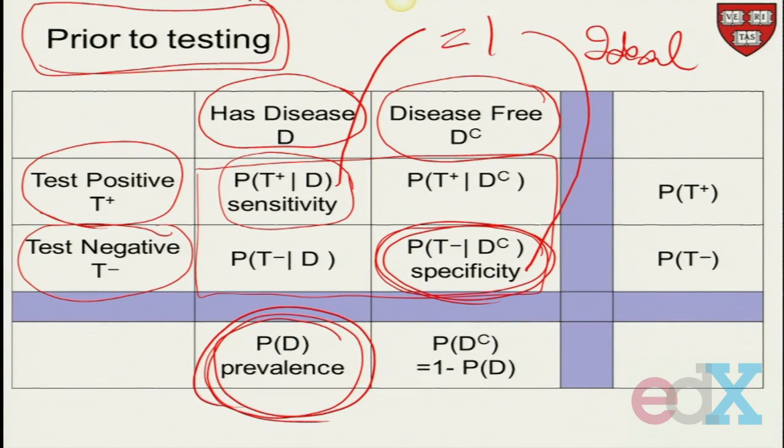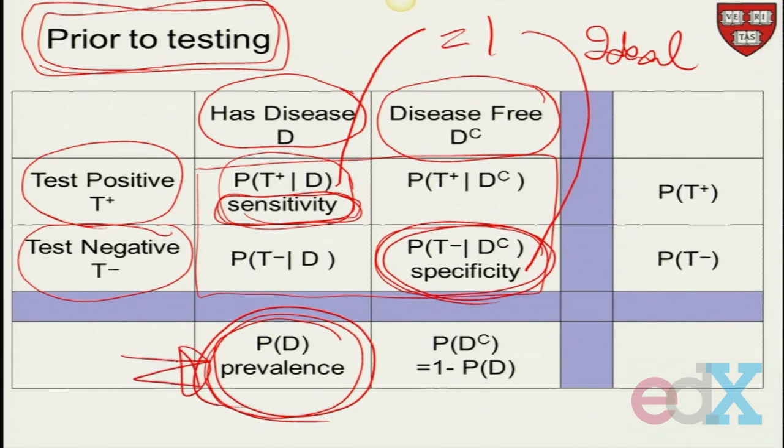Now, this is before we do the testing. Before we do the testing, we've got this set up. And presumably, the company that manufactures the device that you're using to test will give you the sensitivity, will give you the specificity. From somewhere, local conditions will tell you the prevalence that you're testing with. But those are the three quantities that are going to be important to us prior to testing.